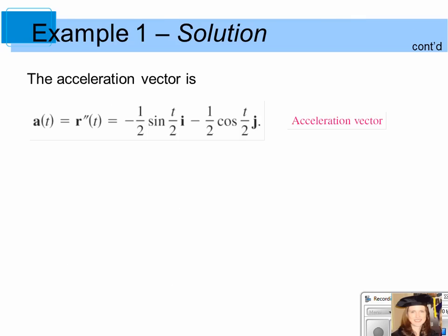The acceleration vector is found by taking the second derivative of r of t, which equals negative one-half sine of t over 2i minus one-half cosine t over 2j.